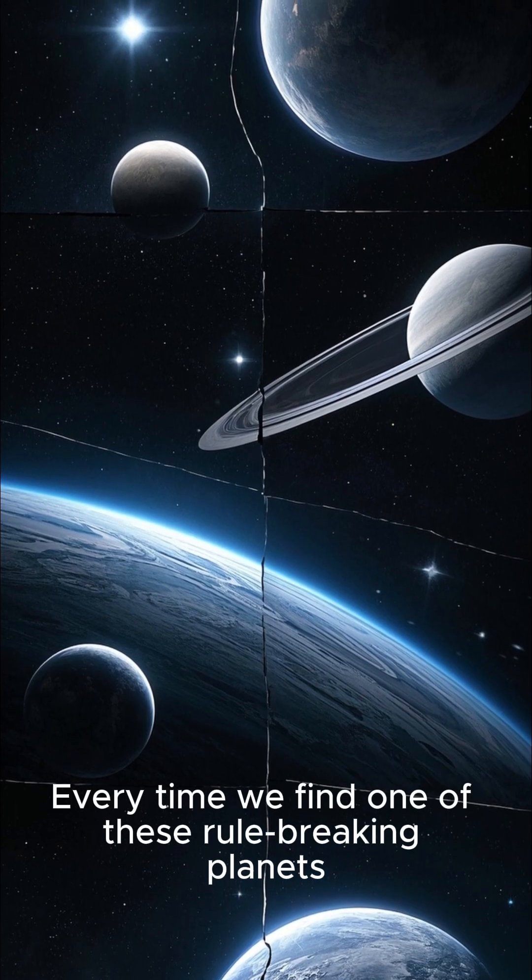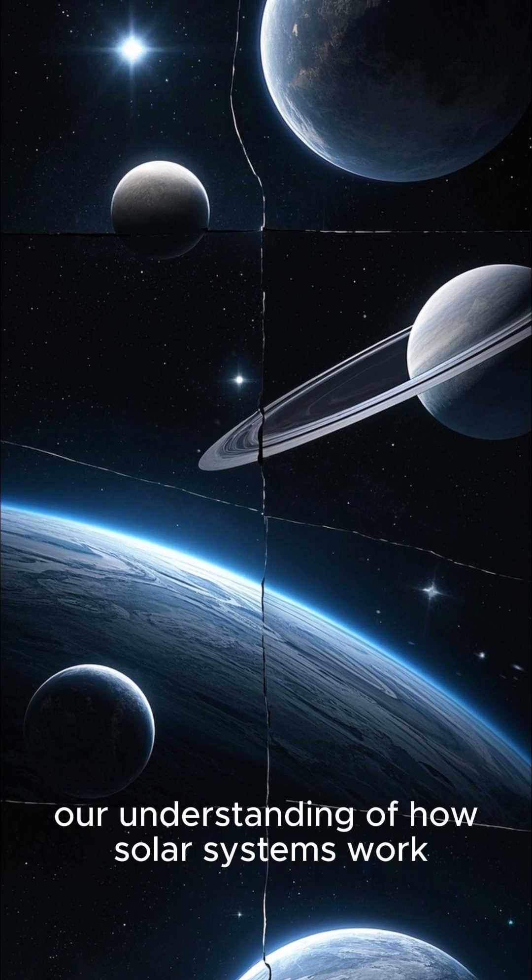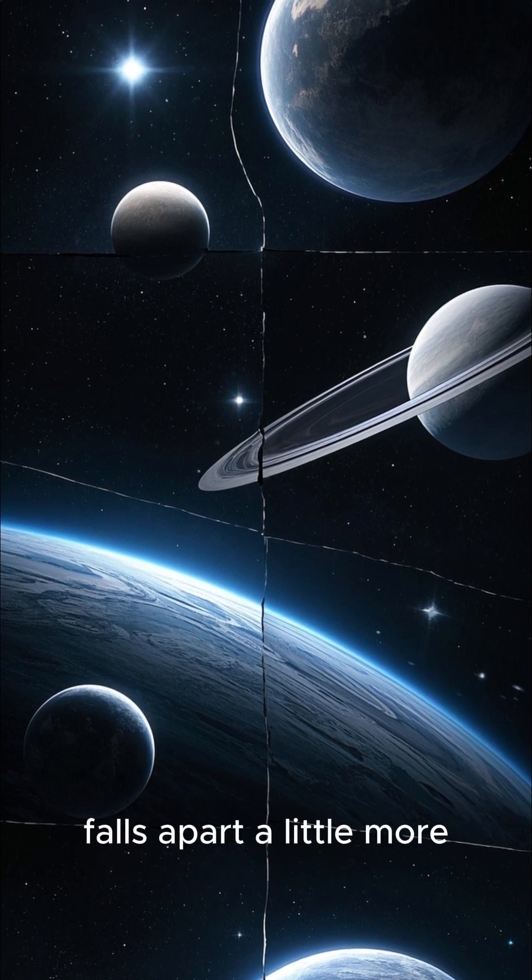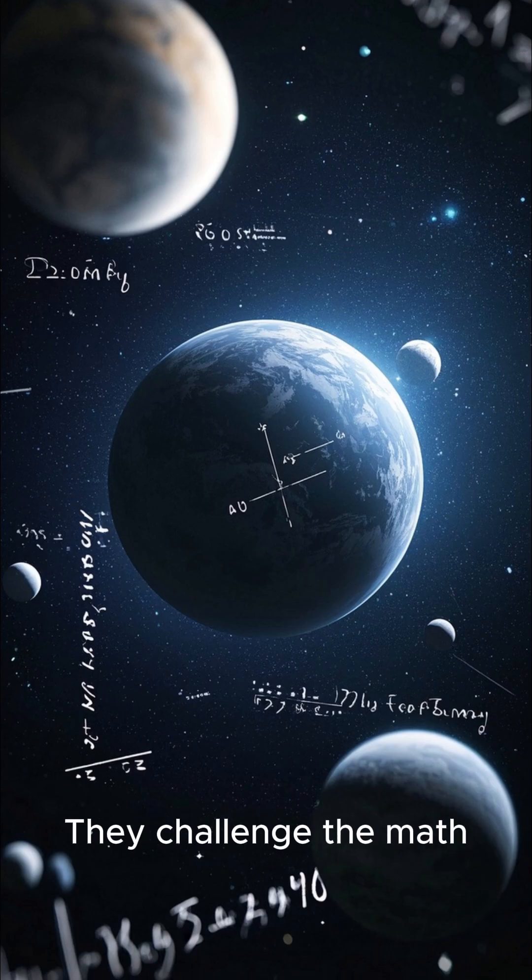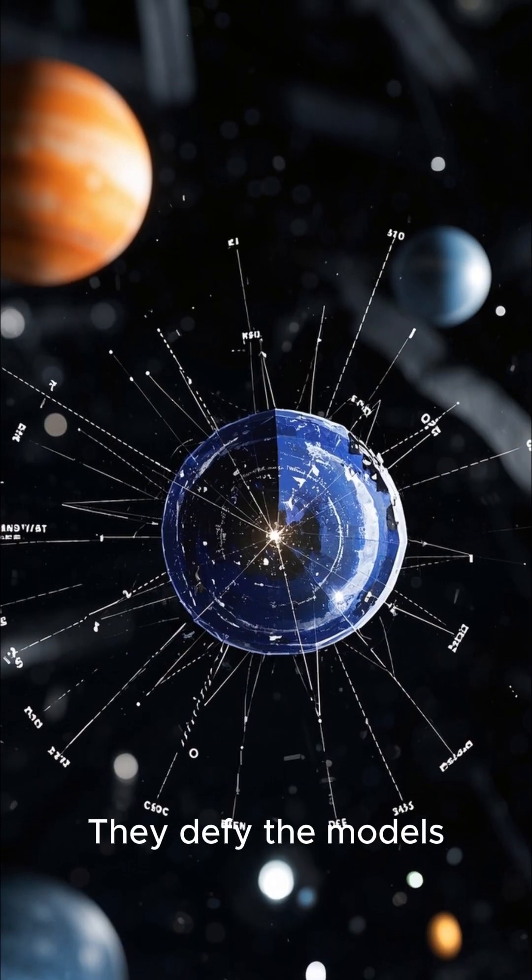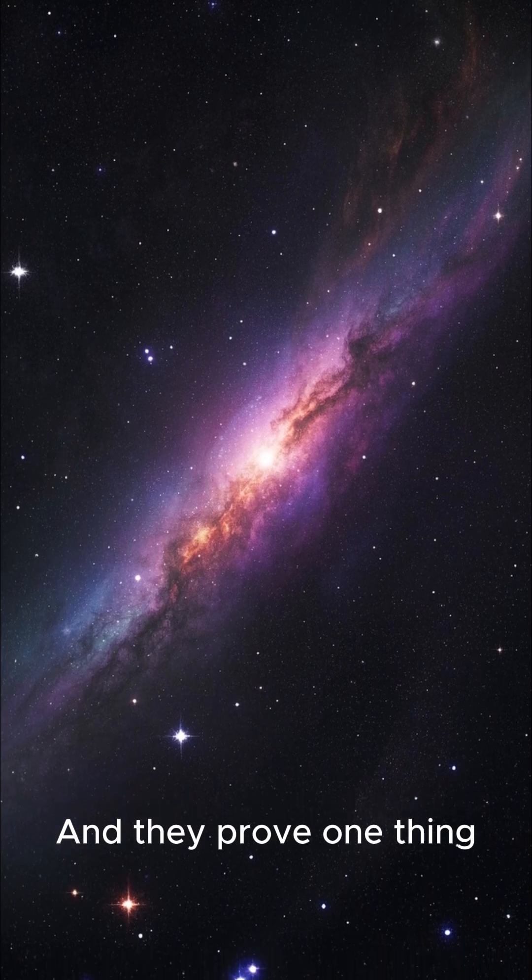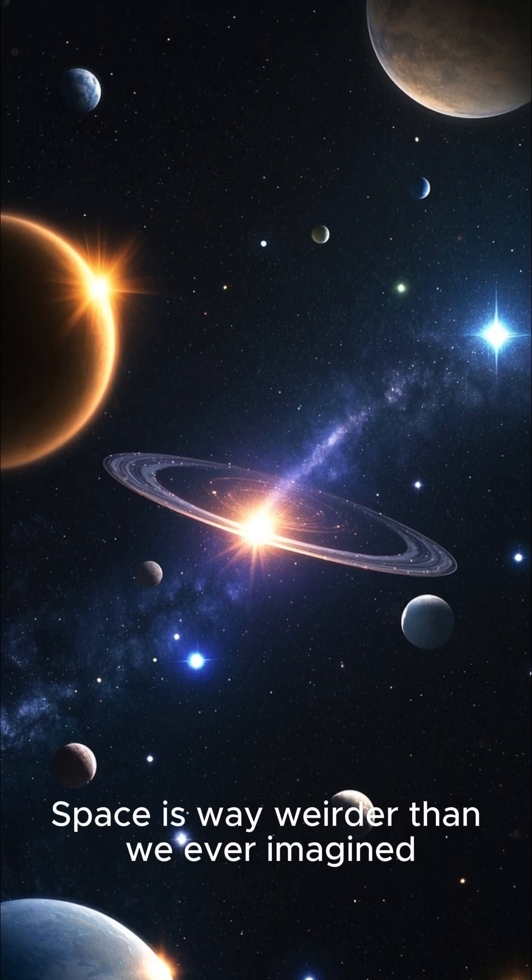Every time we find one of these rule-breaking planets, our understanding of how solar systems work falls apart a little more. They challenge the math. They defy the models. And they prove one thing. Space is way weirder than we ever imagined.